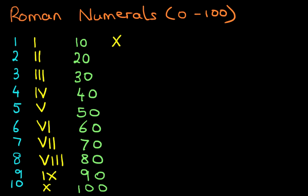And 20 is XX — that's 10, 20. 30 is XXX. How about 40? Well, 40 is 10 less than 50. So we write down 10 less than 50. The symbol for 50 is L, so 40 is XL.